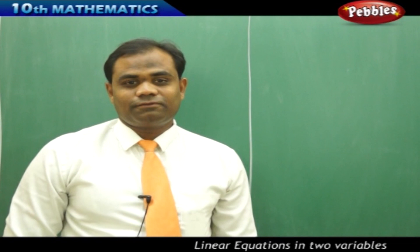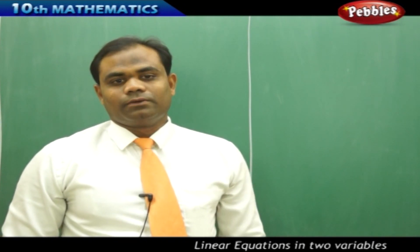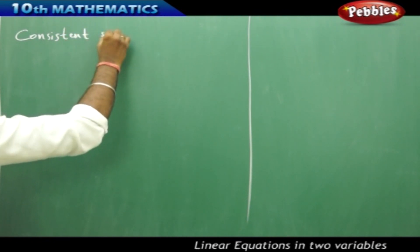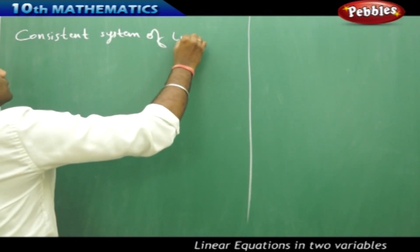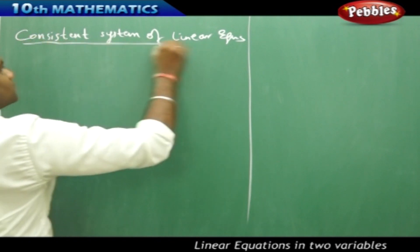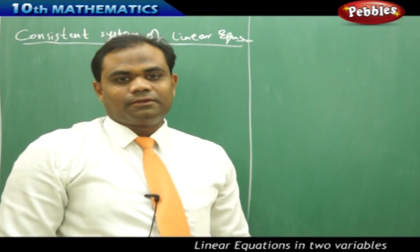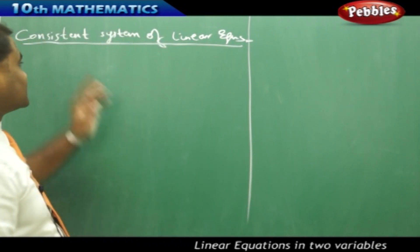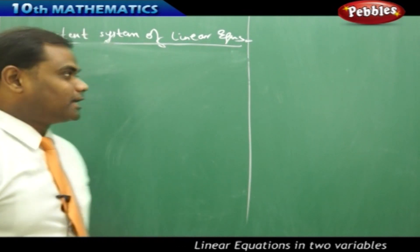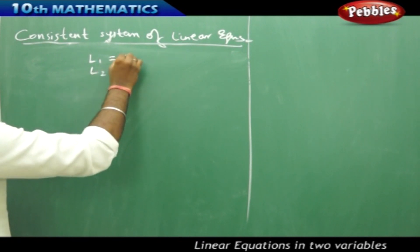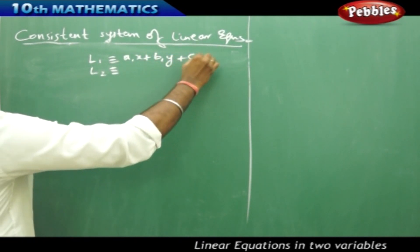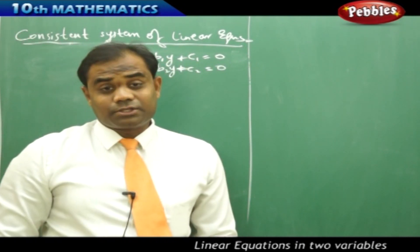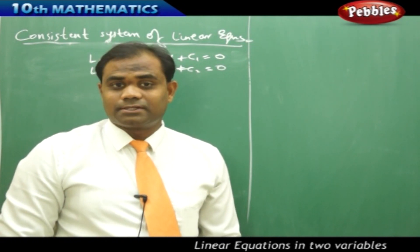Now let's see the definitions of consistency and inconsistency connected with the nature of solutions. For lines L1: a1x + b1y + c1 = 0 and L2: a2x + b2y + c2 = 0, the system is consistent if it has a solution, and inconsistent if it has no solution.